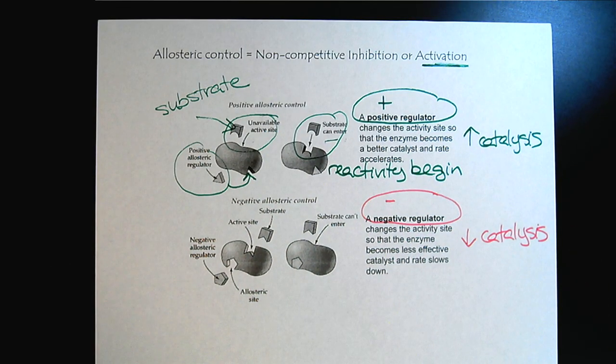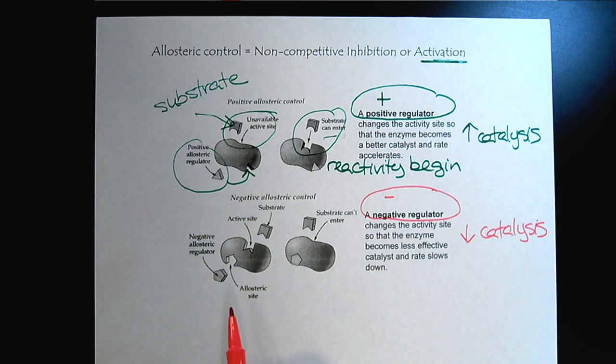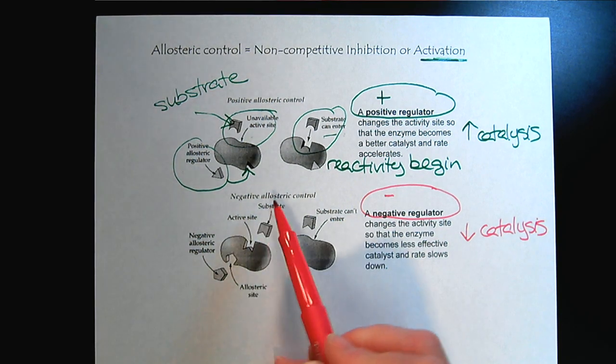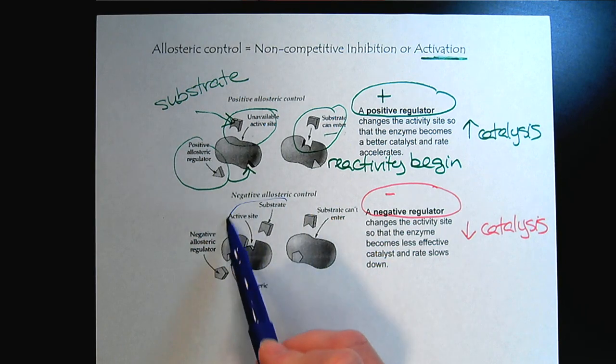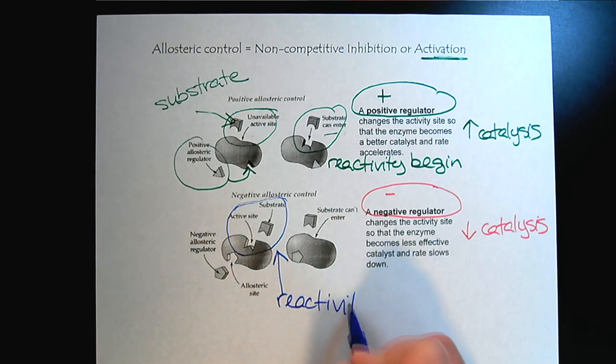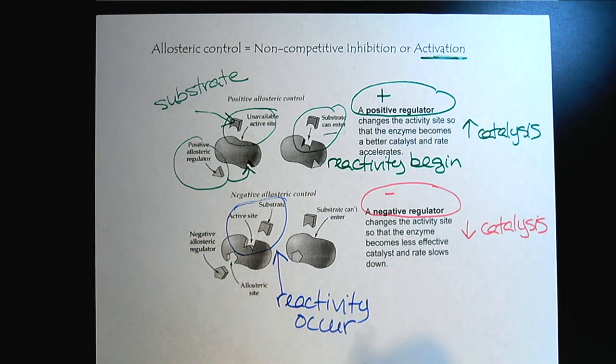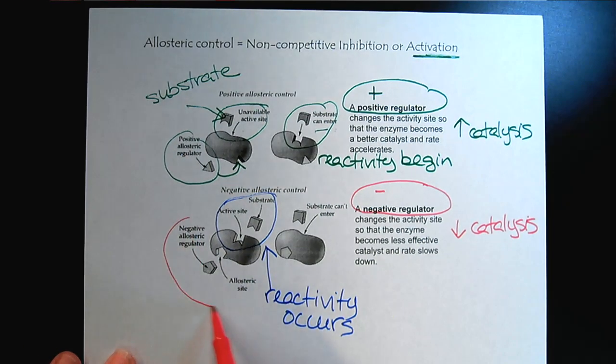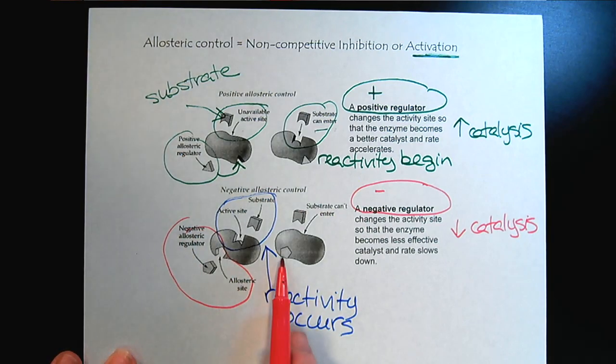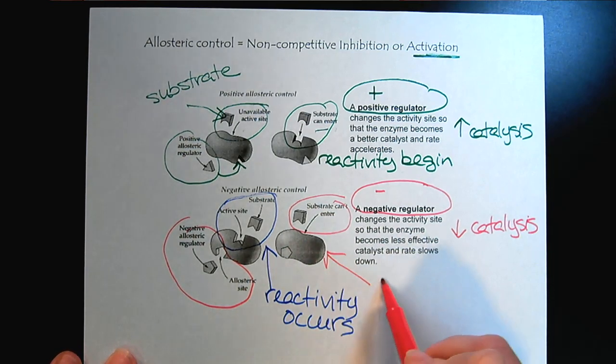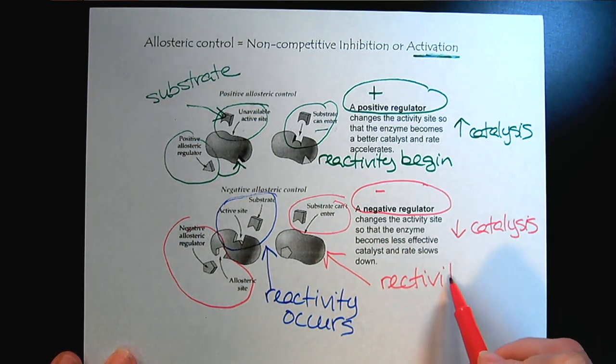Conversely, with the negative allosteric control, here we could see that the enzyme is quite happy to interact with the substrate, all as well. So right now we would have reactivity occurring. The enzyme can do its thing, catalyzing the reaction for this substrate. However, once the negative allosteric regulator comes in, and interacts with the enzyme, now the substrate can't get in. So reactivity stops.